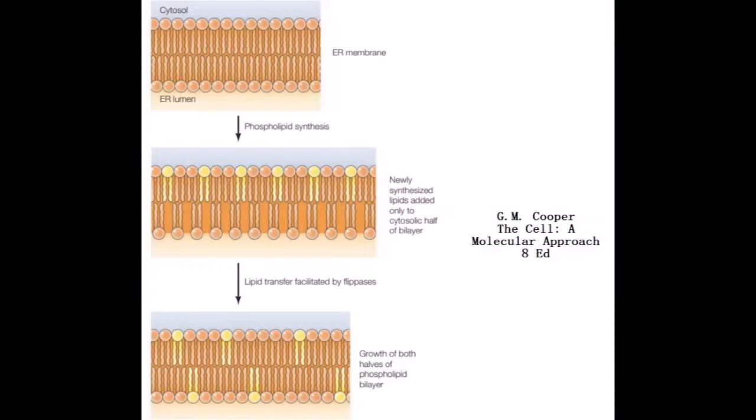To maintain a stable membrane, some of these newly synthesized phospholipids must be transferred to the other half of the endoplasmic reticulum bilayer. This transfer, which requires the passage of a polar head group through the membrane, is facilitated by membrane proteins called flippases.